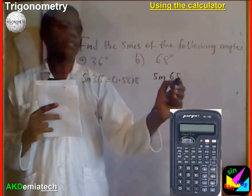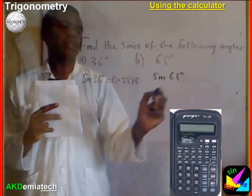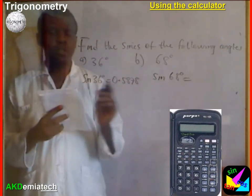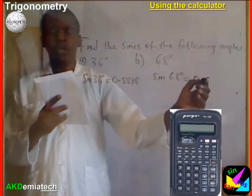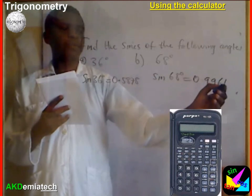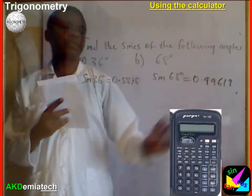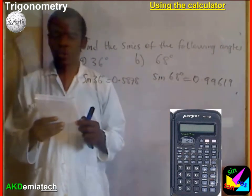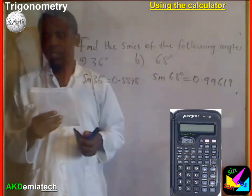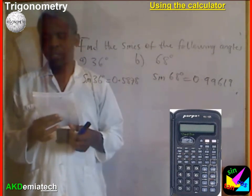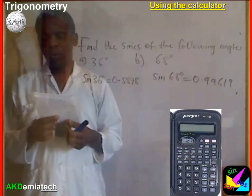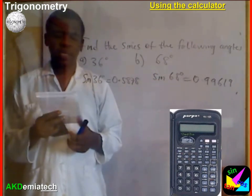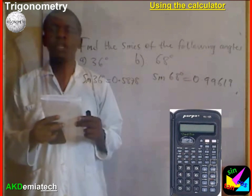Sin 68 degrees — I punch it on my calculator and it gives 0.99619. Use calculators to write down the values of sin 12 degrees, sin 18.12 degrees, and sin 74.42 degrees.